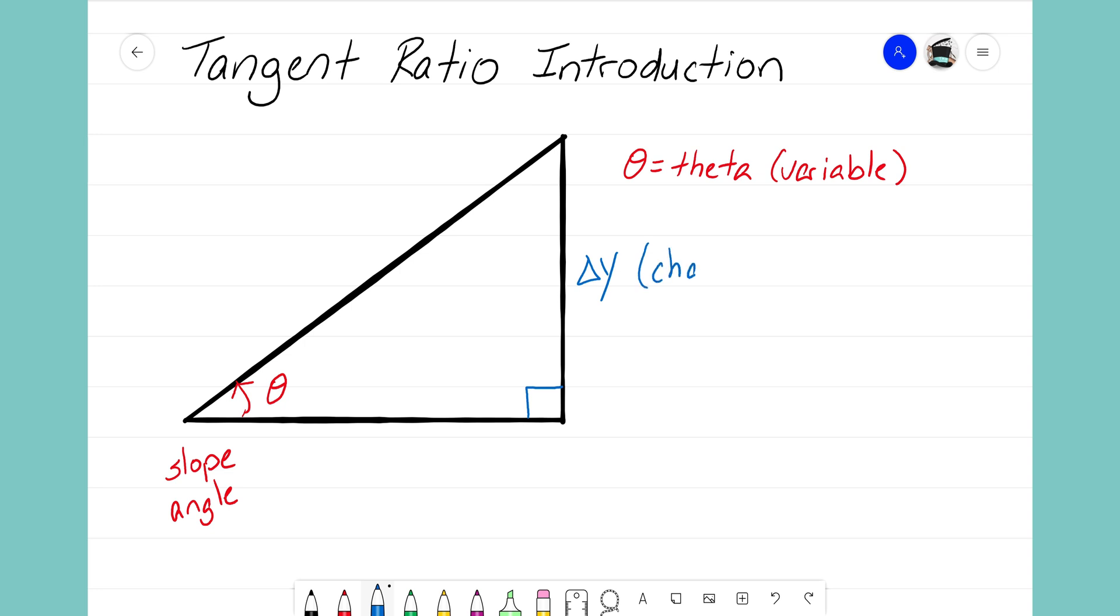What delta y refers to is literally the change in y. Delta is a Greek symbol that stands for change, and what that's representing is how my line is changing in the y direction. Delta y is always the side that's opposite from my slope angle, so it's always easy to find. Whatever angle I'm looking at, the side that's opposite that angle is always your delta y. Now your delta x is the other side.